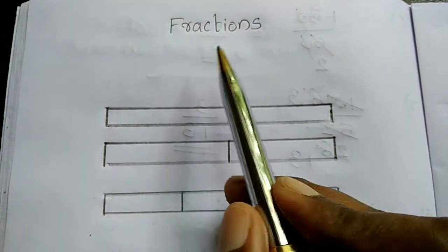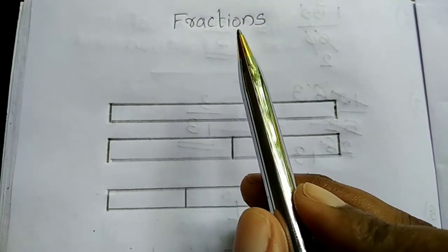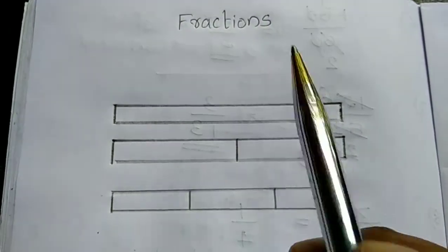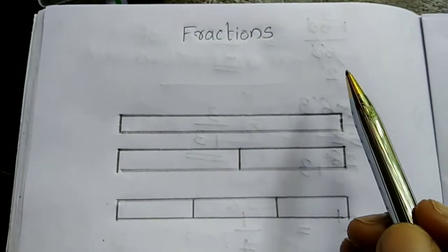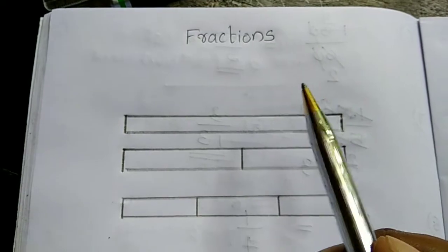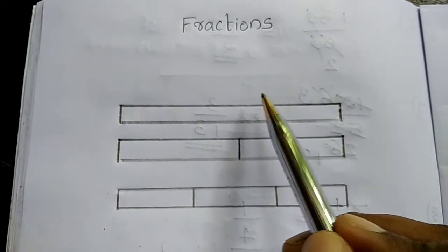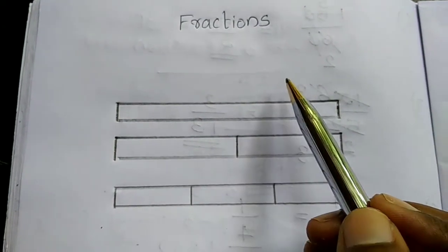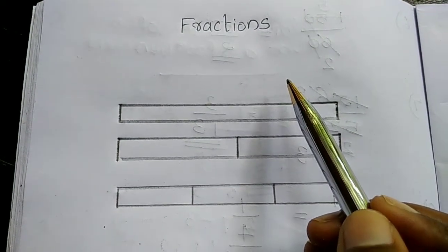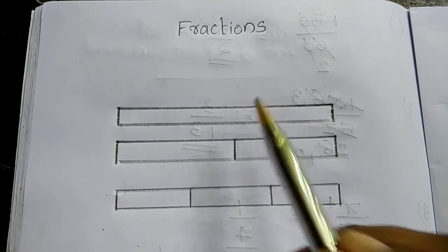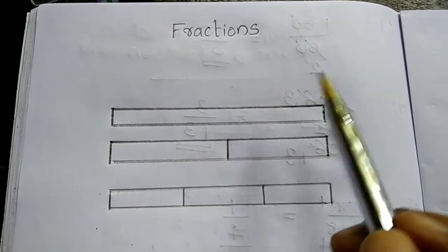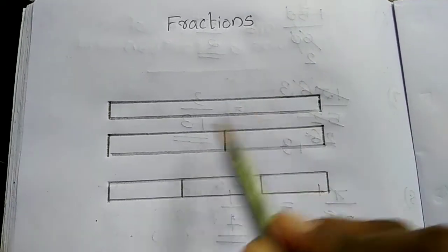A fraction shows part of a whole. When an object is divided into two equal parts, then each part is called one half of the whole.